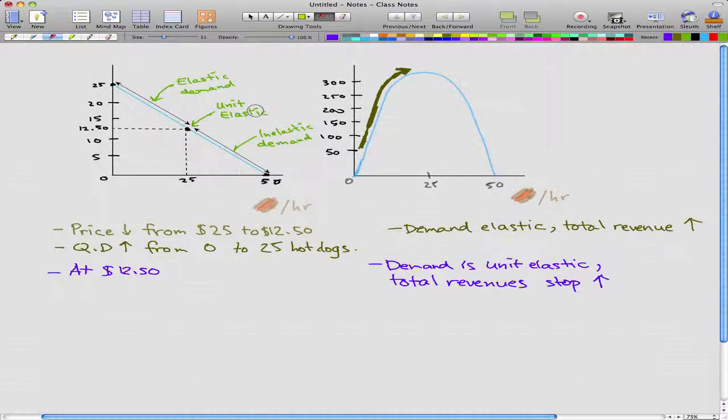This unit elasticity is shown here in this graph. I have an arrow pointer pointing to a price of $12.50 and a quantity demanded of 25. That is our unit elastic demand. On our bell-shaped curve, this is shown at the top, and that is our maximum total revenue.